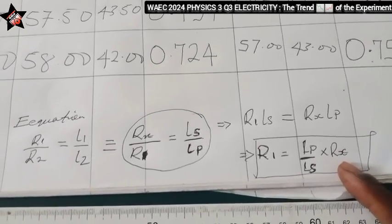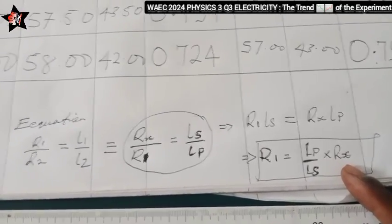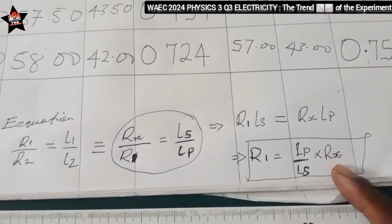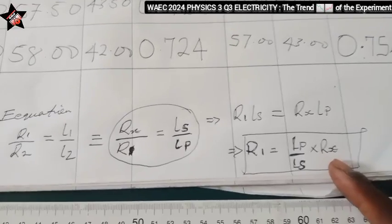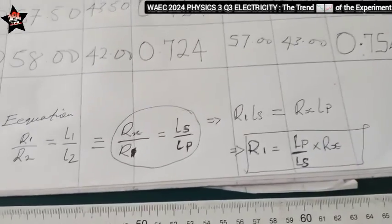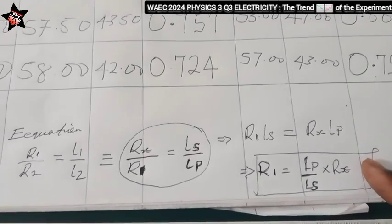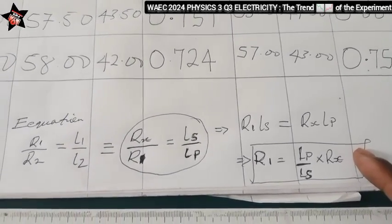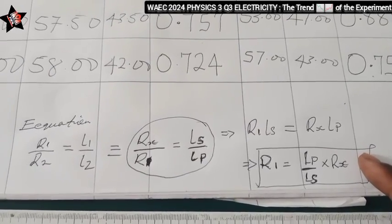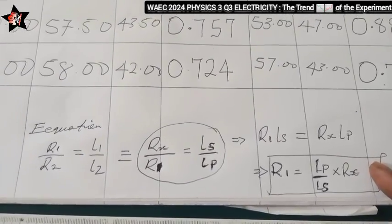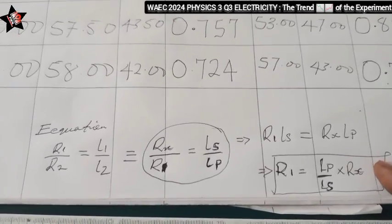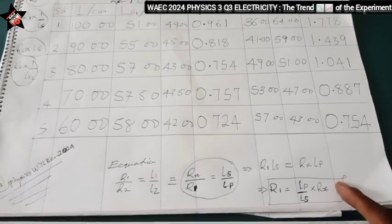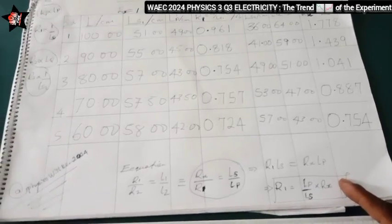Now, this trend of the experiment guides you not to go off the right path while performing experiments. When you know the trend of the experiment, it helps you to stay within the range and not to go off. So when you perform the experiment and you don't get a trend, then your apparatus are wrong or there are errors due to parallax. So before you begin any experiment in physics, discover what the trend is.